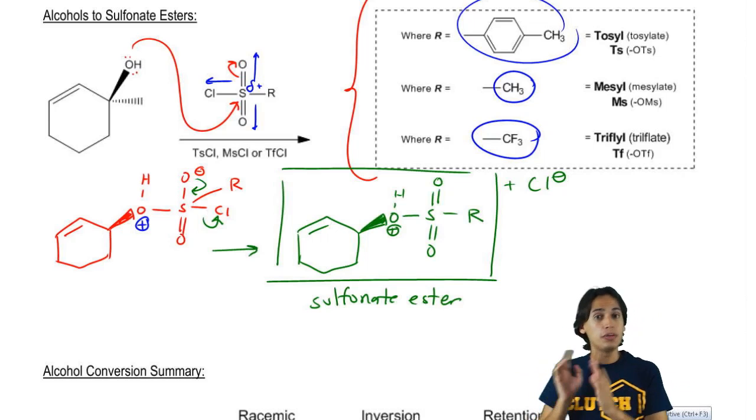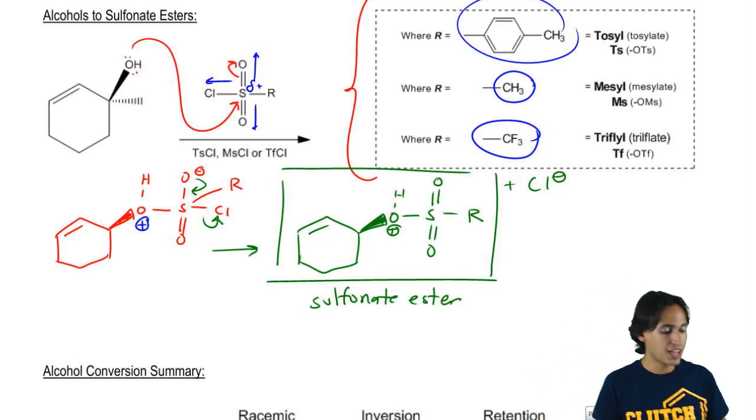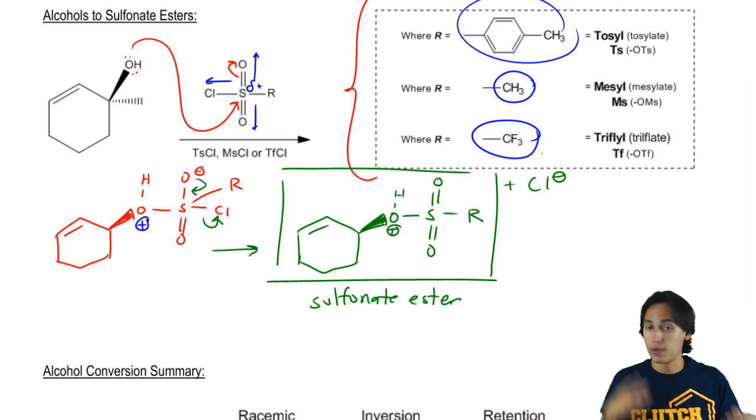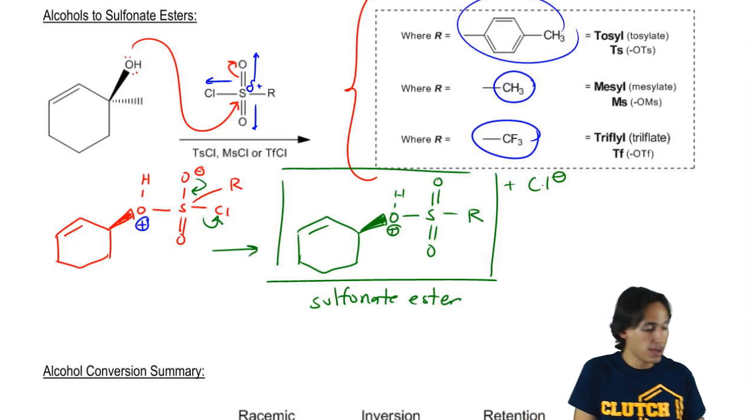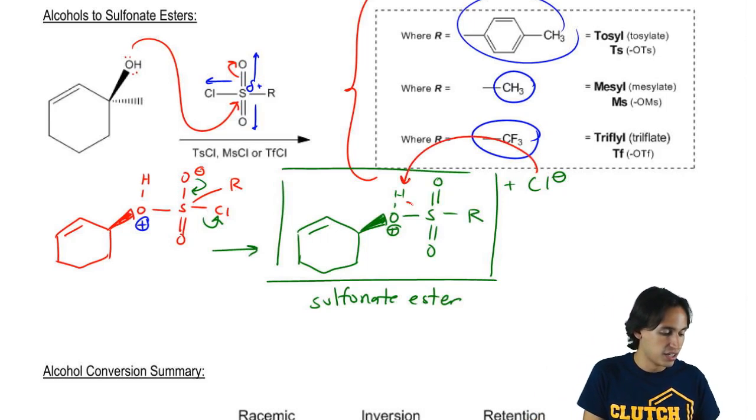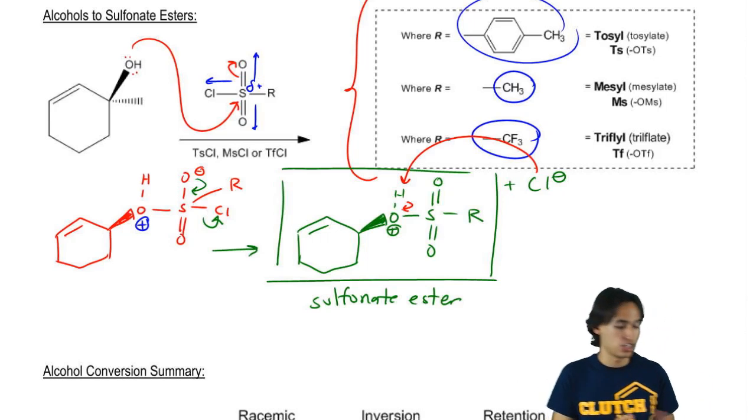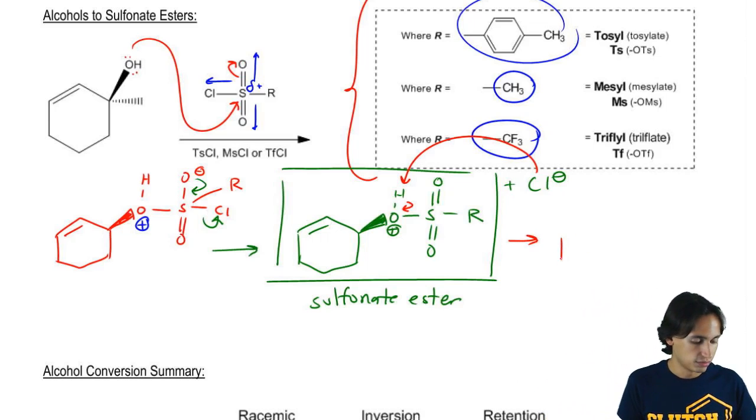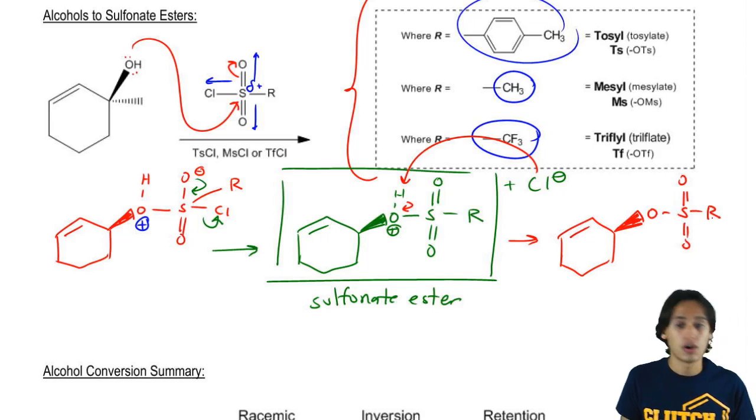This is my sulfonate ester and later on I can react with it. Now the sulfonate ester should be the neutral compound. So what's going to happen is that my Cl or whatever, it's usually a Cl, whatever my anion is, is going to take away that H. So eventually what I should get at the end is a neutral sulfonate ester that looks like this, O, S, double bond O, double bond O, R.